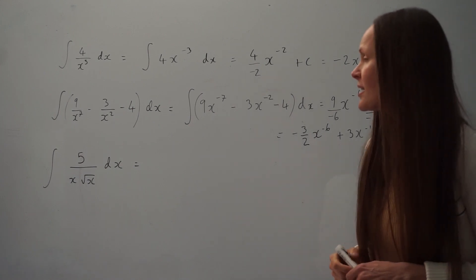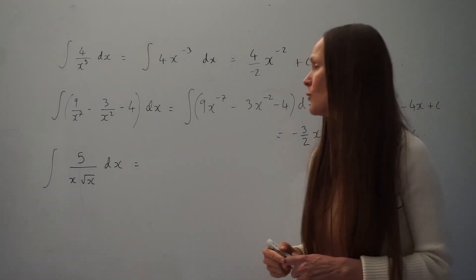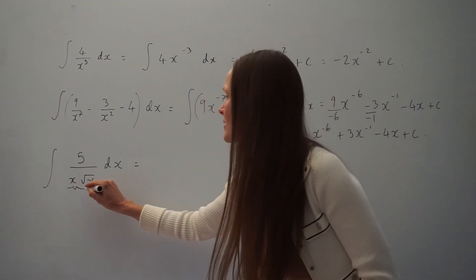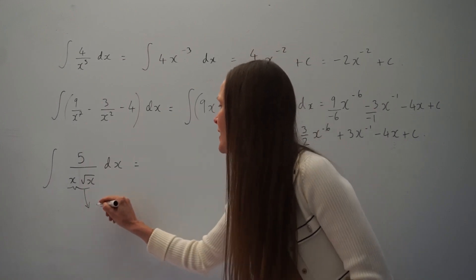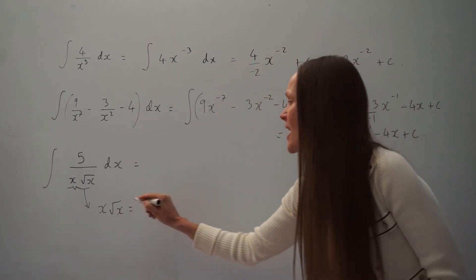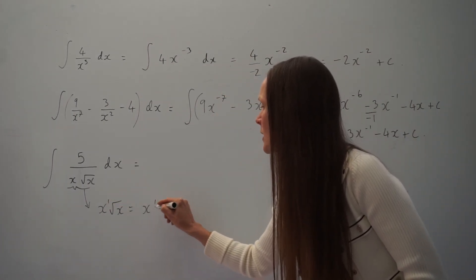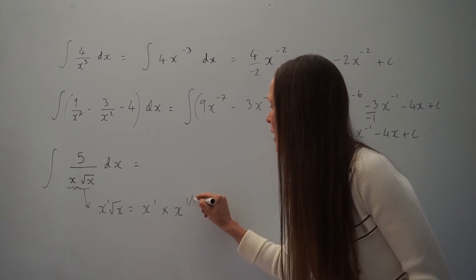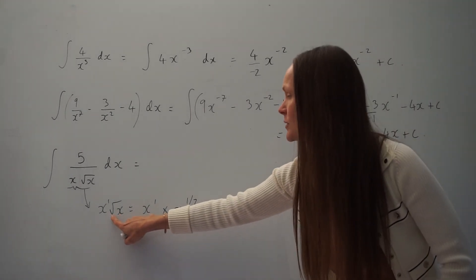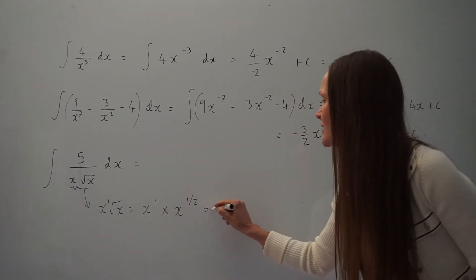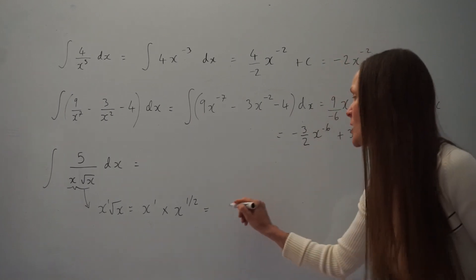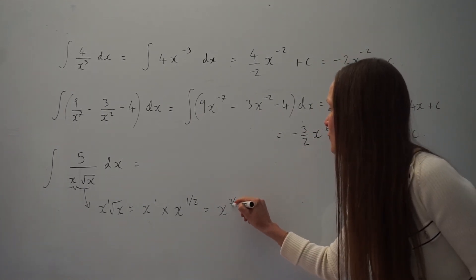In the final question it's a little different. I'm going to write it in its power form, but I'm also going to simplify the denominator. x multiplied by root x is the same thing as x to the power of 1 multiplied by x to the power of a half. When you multiply these x terms together you add the powers, so 1 plus a half is 1 and a half, which is x to the power of 3 over 2.